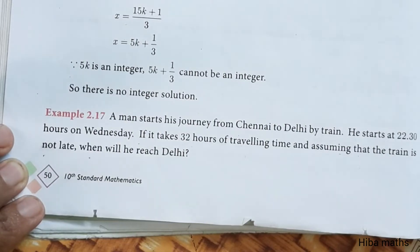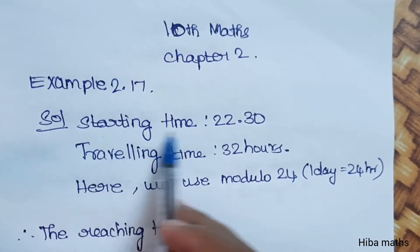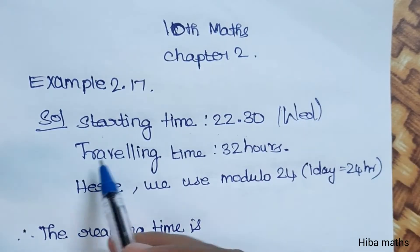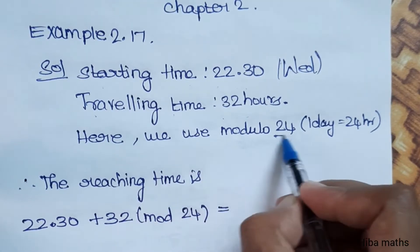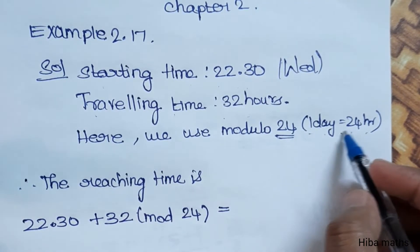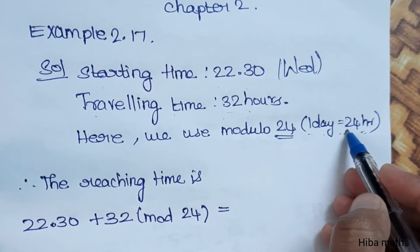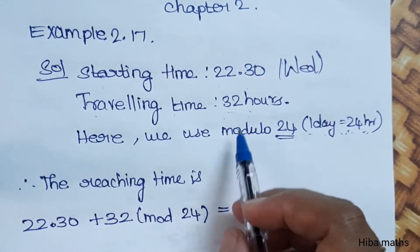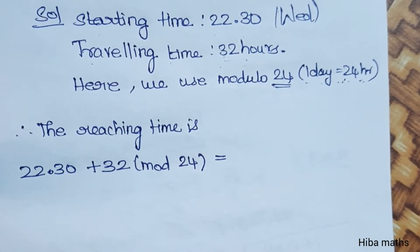The starting time is 22:30 Wednesday. Travelling time is 32 hours. Here we use modulo 24 — we divide by 24 hours. So it will be easy to solve. The reaching time is the start time plus 32, and that is modulo 24.